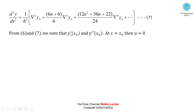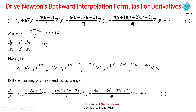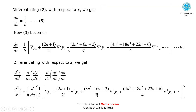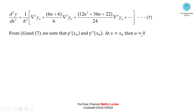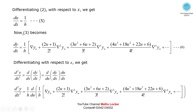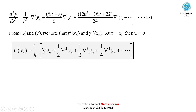From equations 6 and 7, we note that y'(xn) and y''(xn) are evaluated at x = xn, which means u = 0. Putting u = 0 in equation 6: y'(xn) = (1/h)[ΔYN + (1/2)Δ²YN + (1/3)Δ³YN + (1/4)Δ⁴YN + ...], with alternating signs.